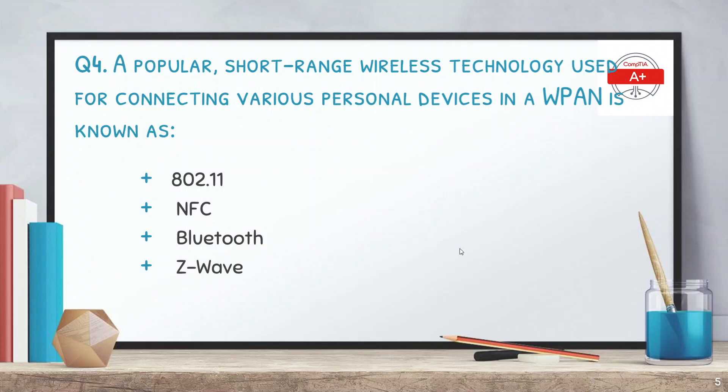The fourth question: a popular short-range wireless technology used for connecting various personal devices in a wireless personal area network (WPAN) is known as — options are 802.11, NFC, Bluetooth, and Z-Wave. The answer is Bluetooth. Bluetooth falls in the PAN, the personal area network, and it is wireless, so the network is known as WPAN.